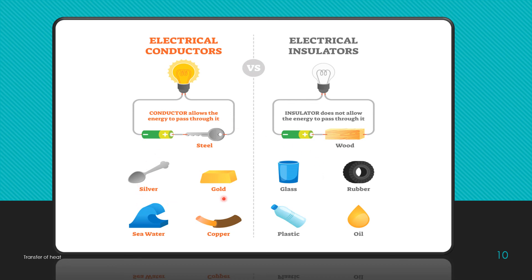Conductors are silver, gold, seawater, copper. These are the conductors. And insulators are glass, rubber, plastics and oil. These are some examples you can see in the screen.